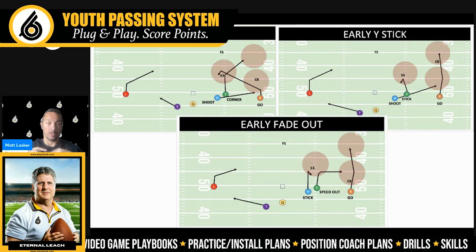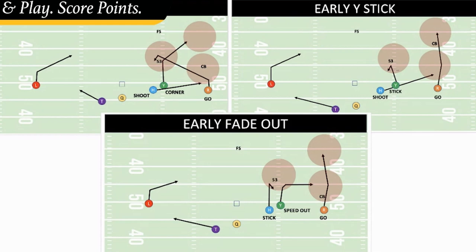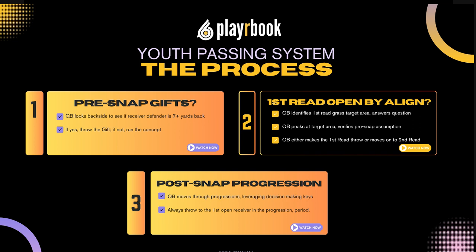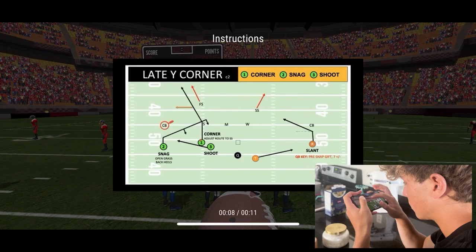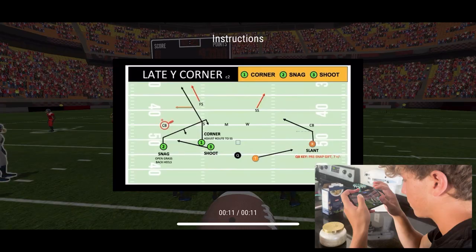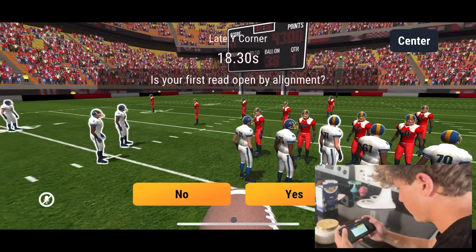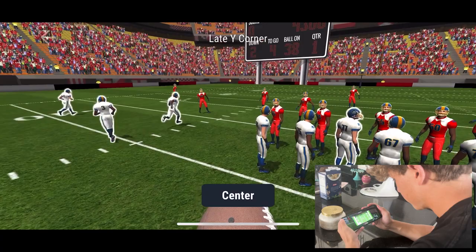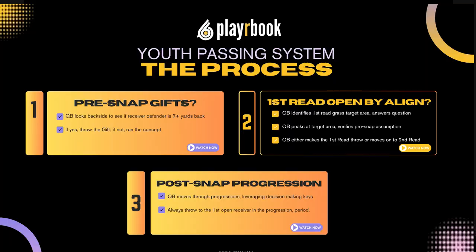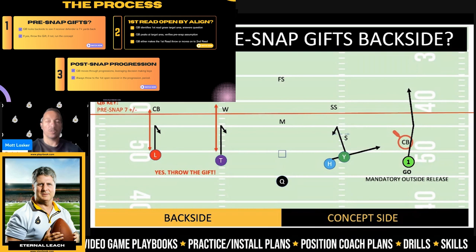We've created a very easy and repeatable process that every quarterback can learn and execute on every single snap. If you do this process every day when you're working on passing, by game time your quarterbacks will be on autopilot, moving through their process like muscle memory — we've seen it happen time and time again. So on this slide, the concept side is on the right, and the non-concept side — we call that the backside — is where we look before every single play.